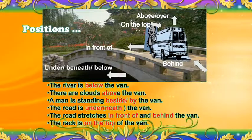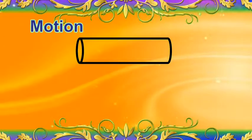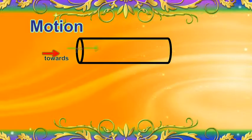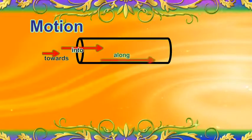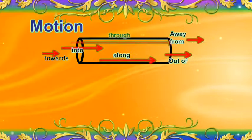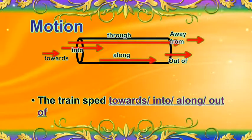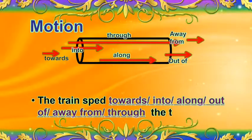Similarly, we can use prepositions to show motion, such as: towards, into, along, out of, away from, through. The train sped towards, into, along, out of, away from, through the tunnel.